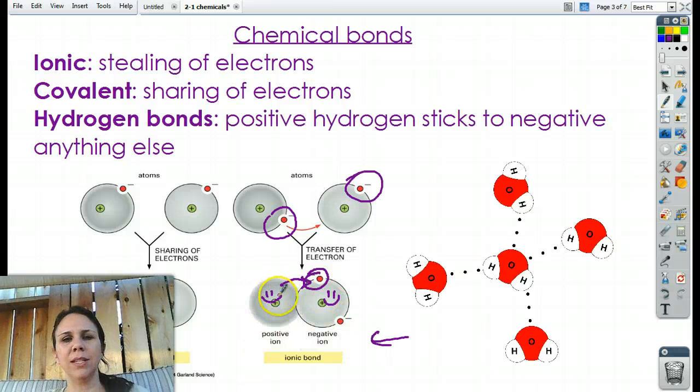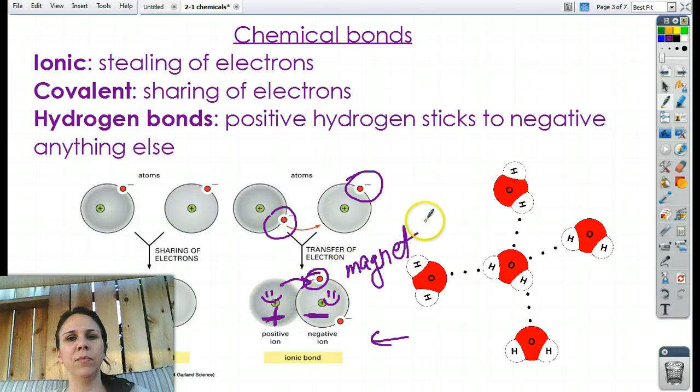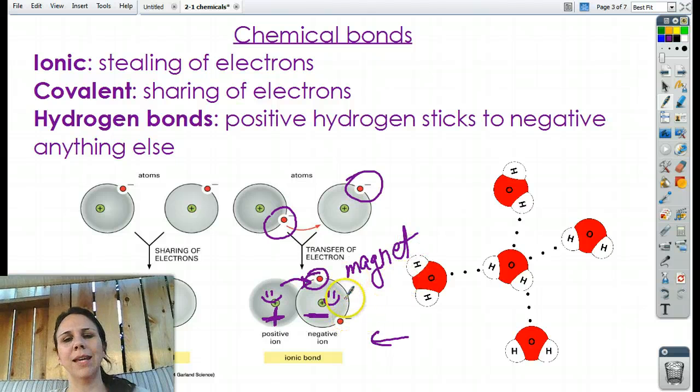So what happens is that this one donates or gives his, okay, really, it's stolen from, his electron to this guy. So now this guy's totally happy because he's got the extra electron, and this guy, he's happy because he really didn't want that card anyway. So they're both really happy. Well, now this one, since he lost a negative charge, that makes him more positive. This guy gained another electron, which makes him more negative. So if you know anything about magnets, the positive side and the negative side of a magnet stick together. So that makes these guys stick together very similar to magnets. So you can kind of think of ionic bonds as magnets.